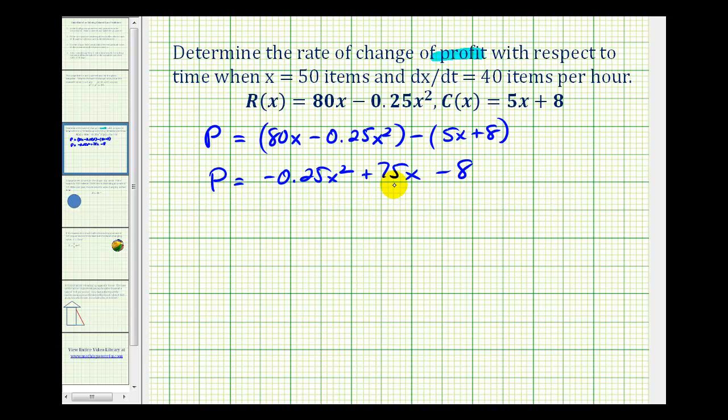So this equation is good if we want to know the profit after producing and selling x items. But we want to know the rate of change of the profit with respect to time when x equals 50 and dx/dt equals 40. So we need to differentiate the profit function with respect to time.